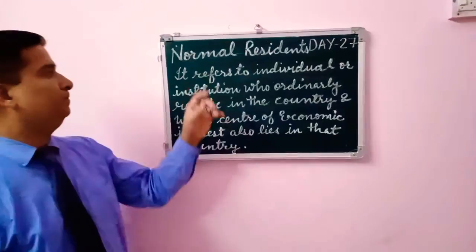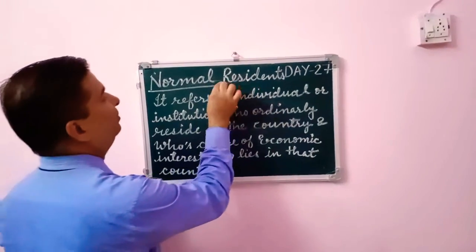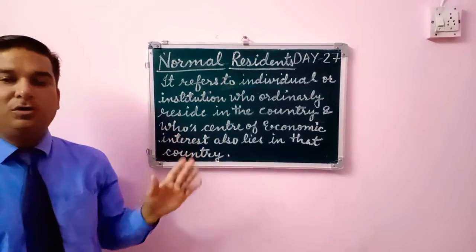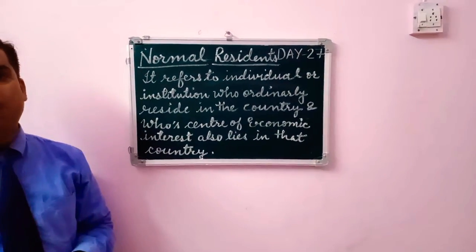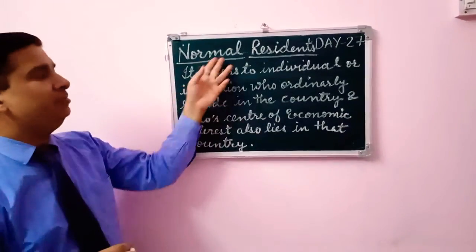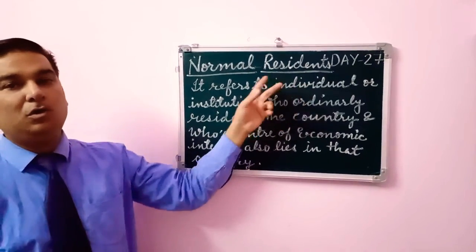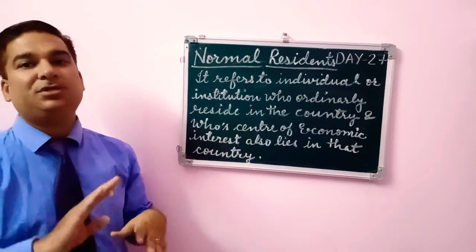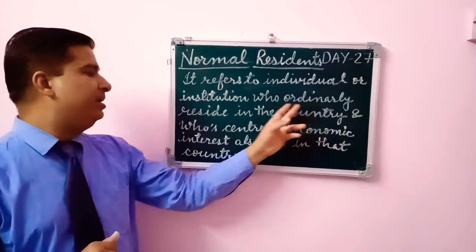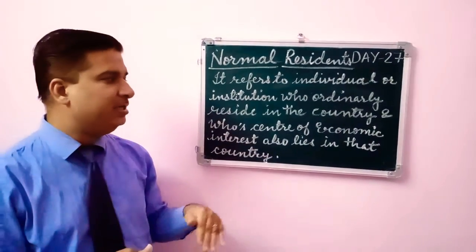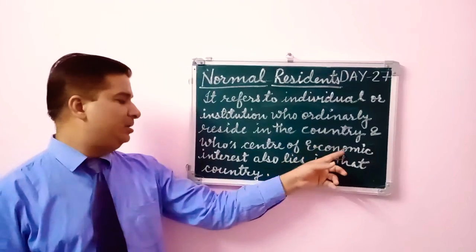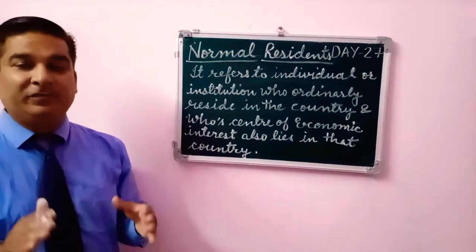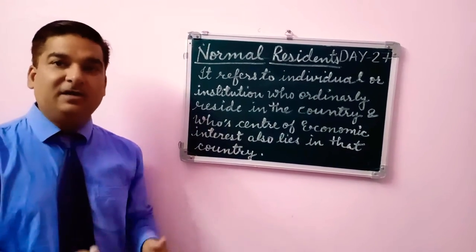The next topic is Normal Residence. When we calculate National Income, we must identify the meaning of Normal Residence. Normal Residence refers to an individual or institution — which can be a group of persons — who ordinarily reside in a country, i.e., the country whose center of economic interest or center of economic activities also lies in that country.